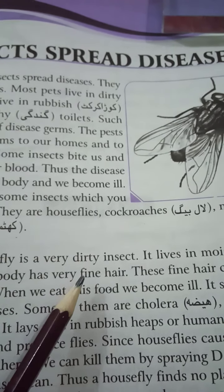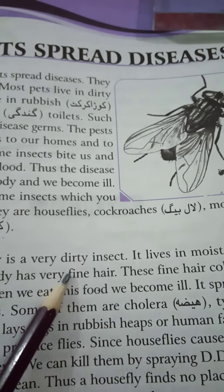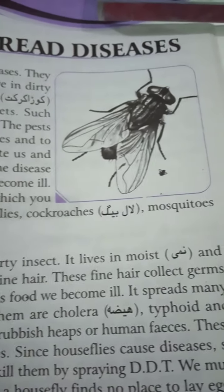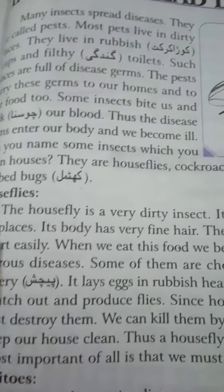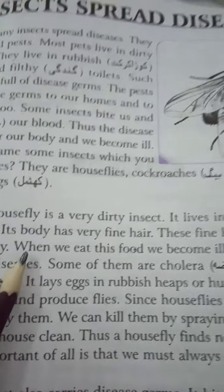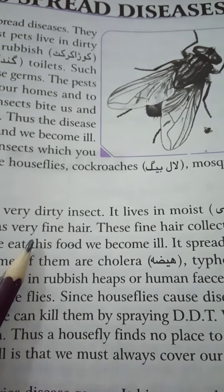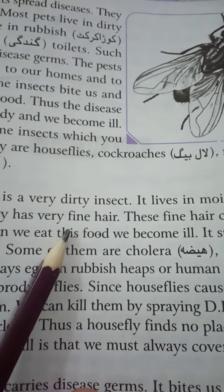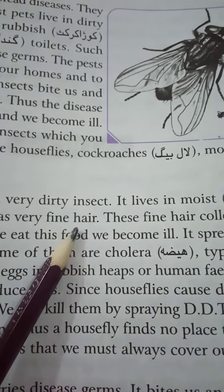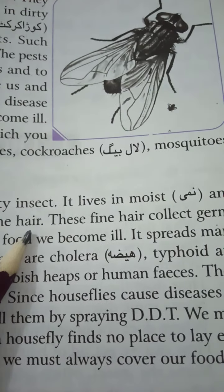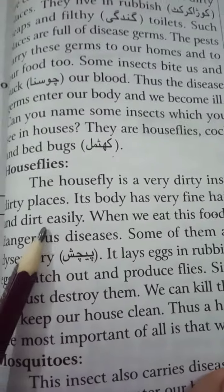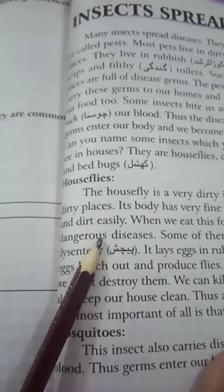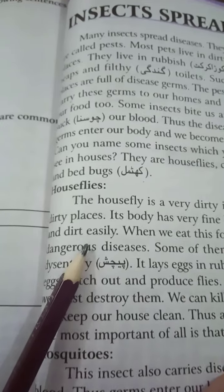Can you name some insects which you see in houses? They are house flies, cockroaches, mosquitoes, and bed bugs. (بچوں، ان سب چیزوں سے بیماریاں پھیلتی ہیں — یہ جراثیم لے کر آتے ہیں گھروں میں اور جراثیموں سے بیماریاں پیدا ہوتی ہیں۔)